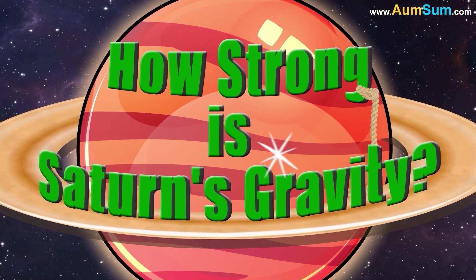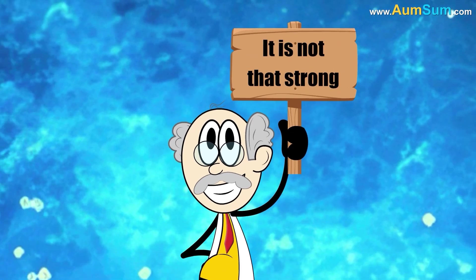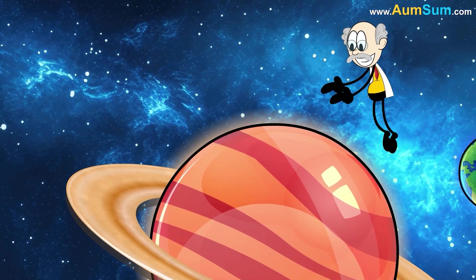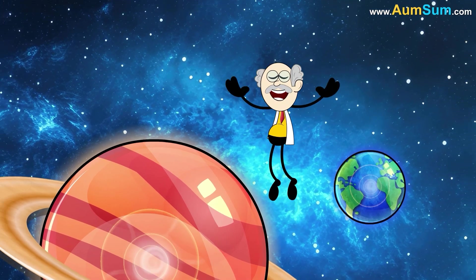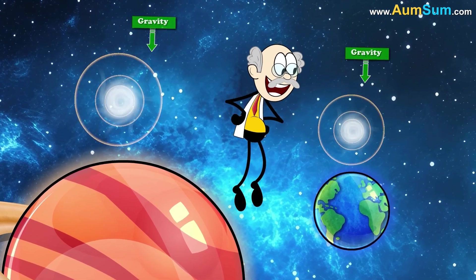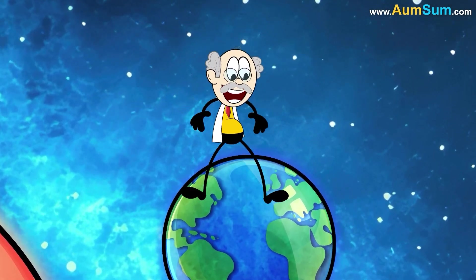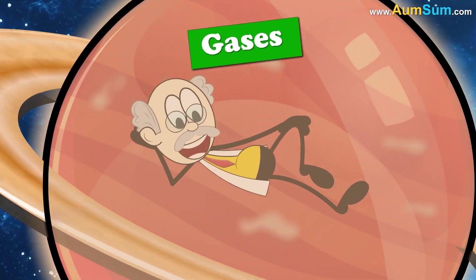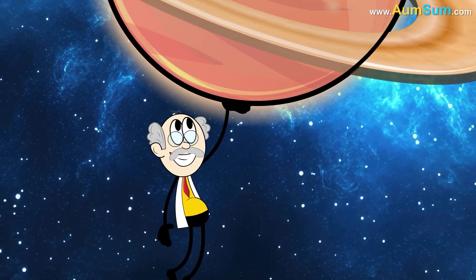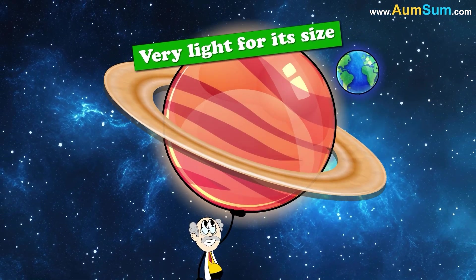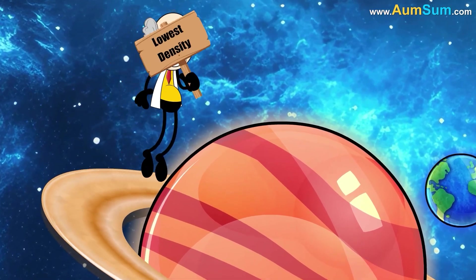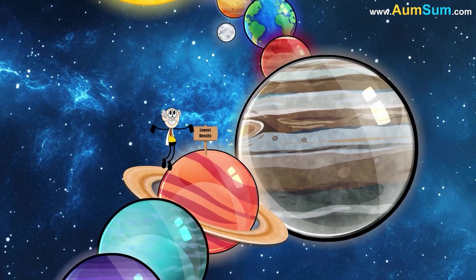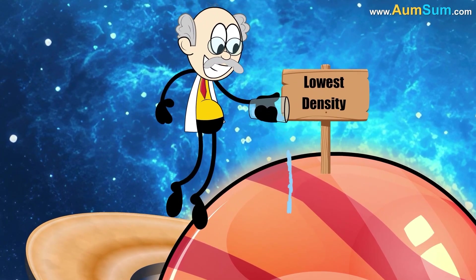How strong is Saturn's gravity? It is not that strong. In fact, even though Saturn is much larger than Earth, its gravity is only a little more as compared to Earth. This is because, as compared to Earth which is solid, Saturn is only made up of gases. This makes Saturn very light for its size. Actually, Saturn has the lowest density of all the planets in our solar system, even lower than the density of water.